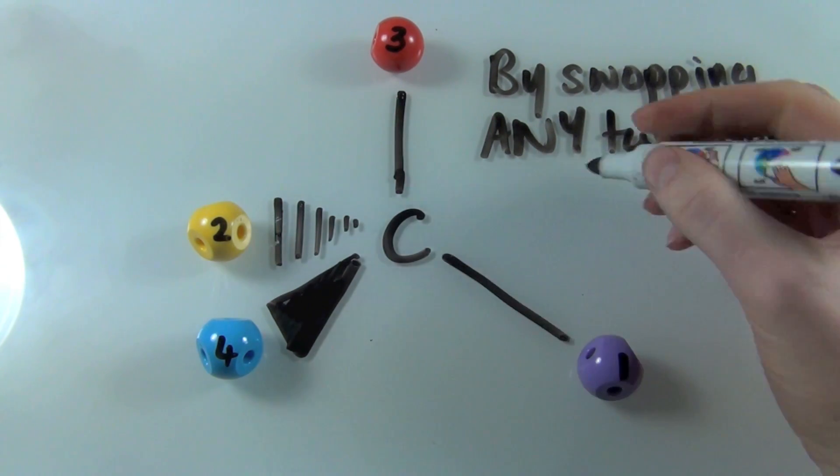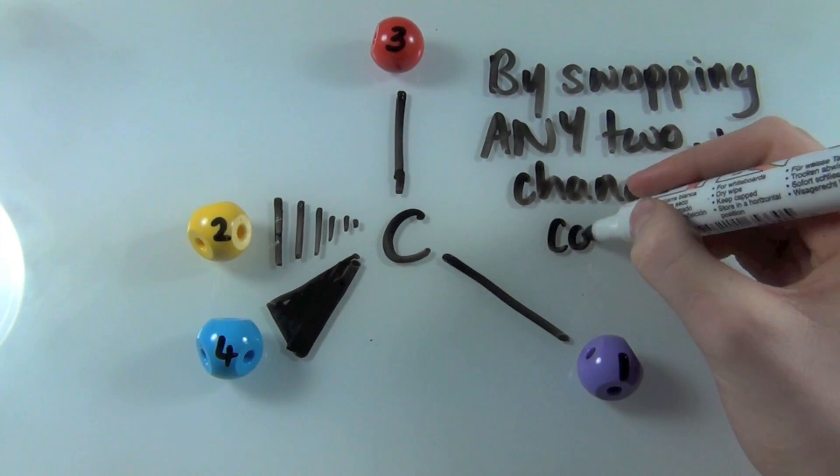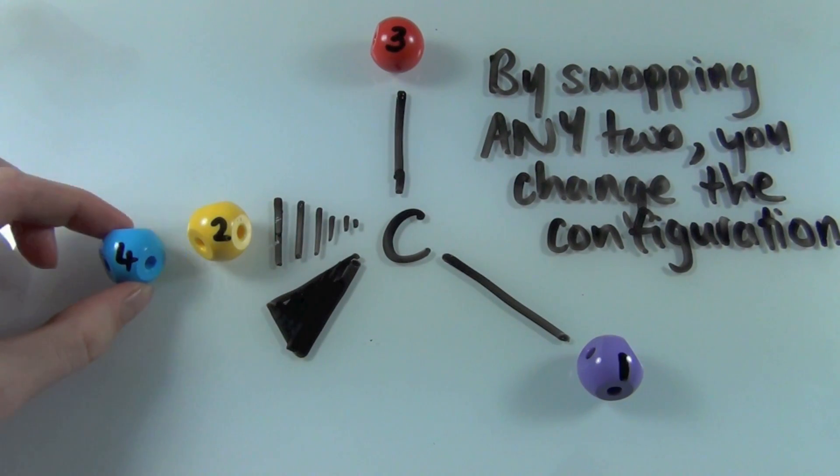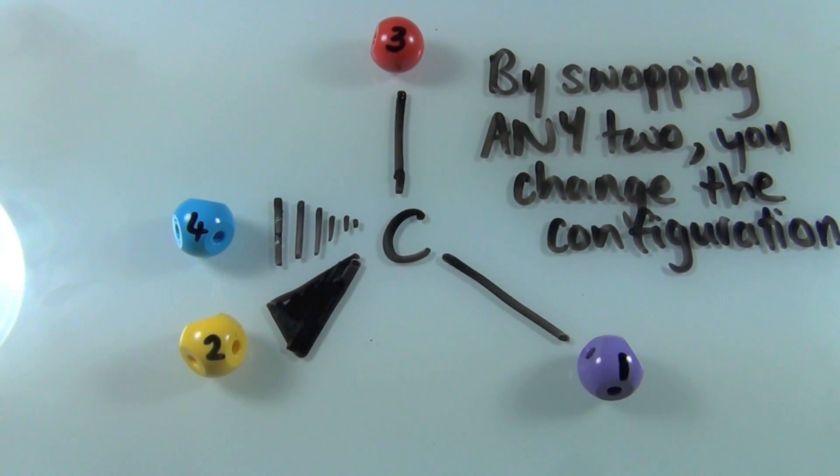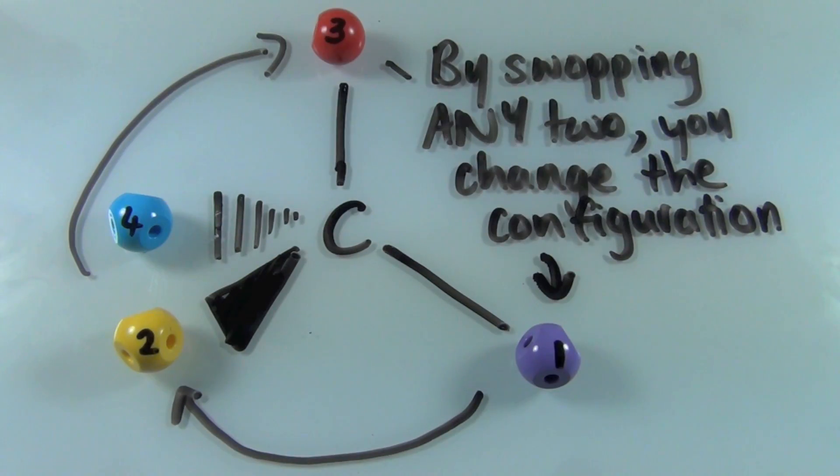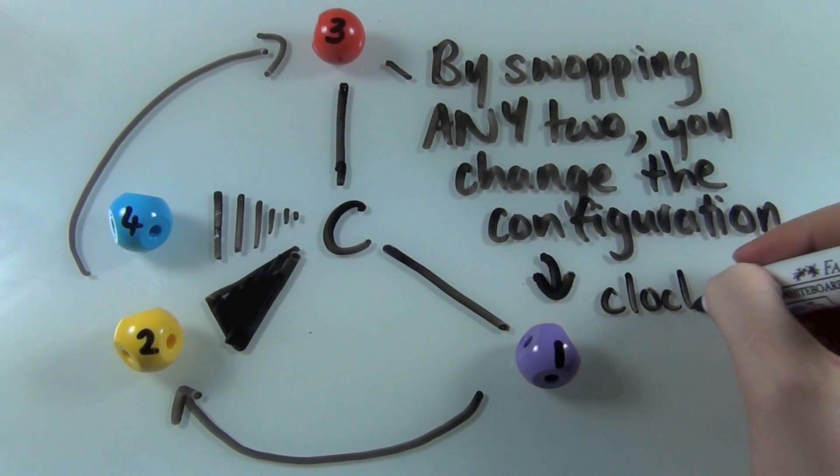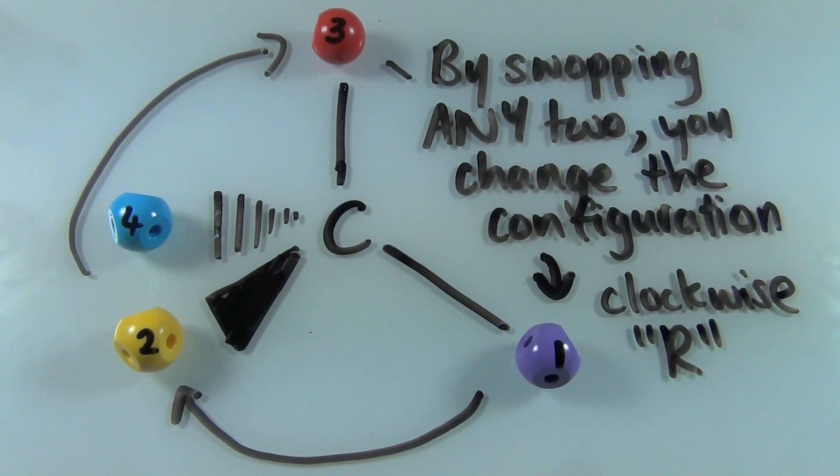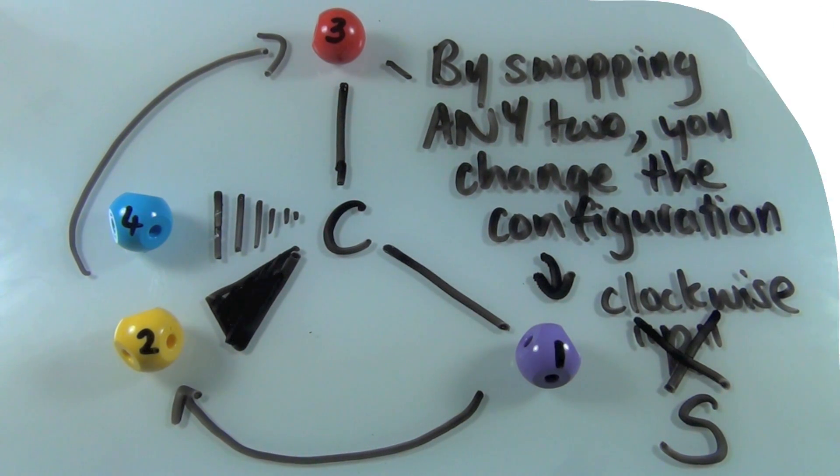We're going to use our knowledge that by swapping any two groups, you change the configuration of the molecule. And then what we're going to do is we're going to join up the numbers as usual. We're going to assign a hypothetical configuration and then we're going to cross it out and we're going to assign the other one. So the configuration of this molecule is S and not R because we changed the two groups.